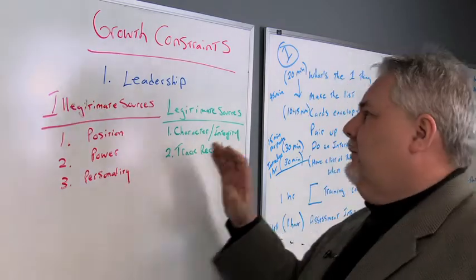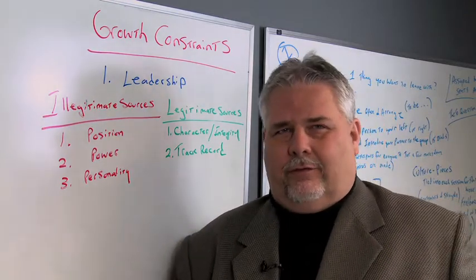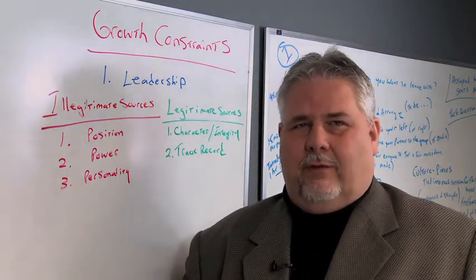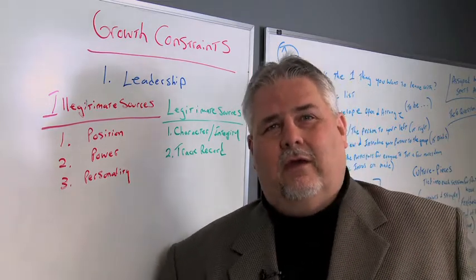But we use legitimate sources of influence such as character and integrity. People want leaders they can trust and they want to be able to trust each other. And when trust is present, speed is present and that causes cost to go down.